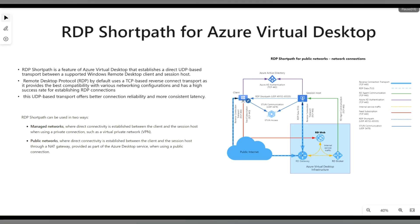RDP Short Path is a feature of Azure Virtual Desktop that establishes a direct UDP-based transport between a supported Windows Remote Desktop client and session host. It creates a direct connection between your session host and client instead of going via the AVD gateway. By default, Azure Virtual Desktop uses TCP-based connectivity and goes over the AVD gateway, which is also called reverse connect.